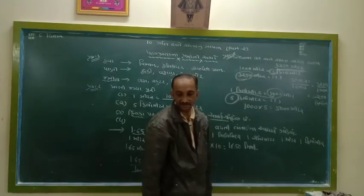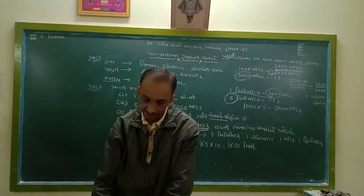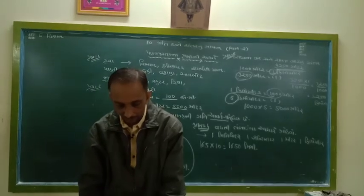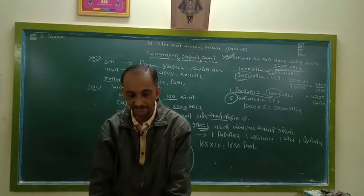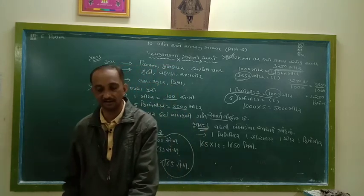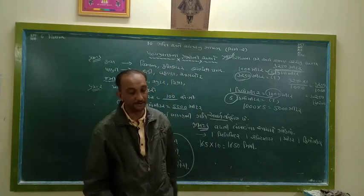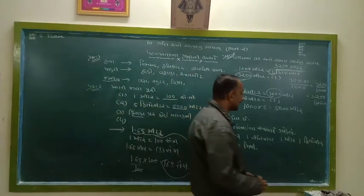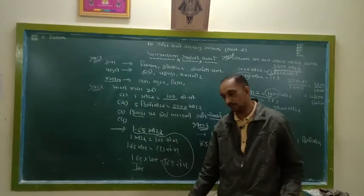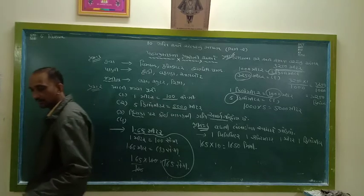પ્રશ્ન નંબર ૧ થી ૬ ની ચર્ચા કરી. ત્યારબાદ પ્રશ્ન નંબર ૭, ૮, ૯ અને ૧૦ તમારી જાતે ગણો. આ ચેપ્ટરનું સ્વાધ્યાય પૂર્ણ કરી, તેના ફોટા પાડી મારા WhatsApp નંબર ઉપર સેન્ડ કરવાનું. દરેક વિદ્યાર્થીને ગૃહ ચિહ્ન.